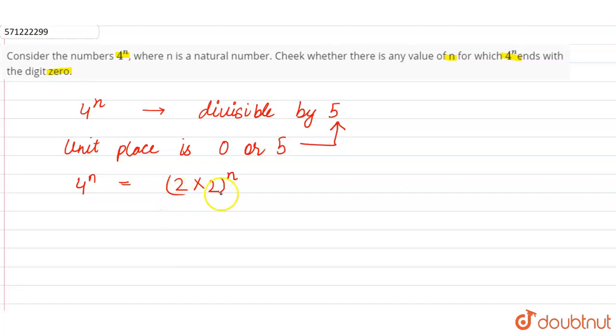you know, the factors are 2 and 2 only, so there is no factor that is 5. So we can say that 4^n cannot end